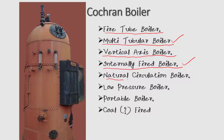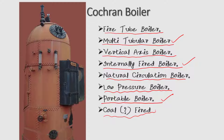It is a natural circulation boiler. It is a low pressure boiler — the Cochrane boiler is used for low pressure steam. It can be easily transported to any place, which is why it is a portable boiler, and it is a coal-fired boiler. Any solid fuel can be used, but it is intended for coal firing.